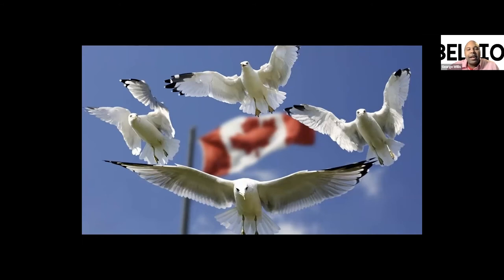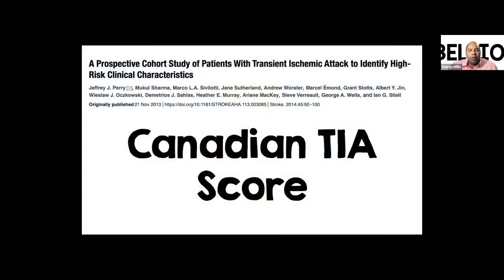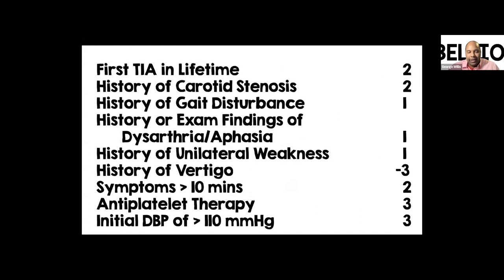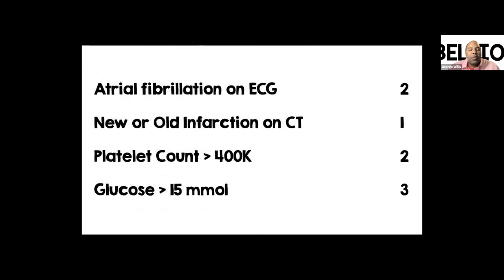Here comes Canada to save the day. The Jay Perry group came up with the Canadian TIA score, which is more useful than the ABCD2 score. Admittedly, it's a little cumbersome to calculate — there are many clinical features with associated point systems as well as clinical data elements used to calculate this score.